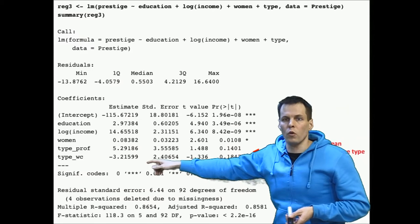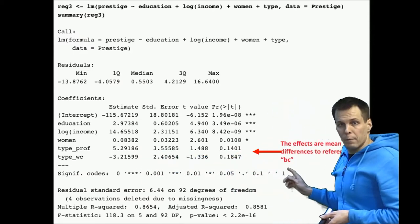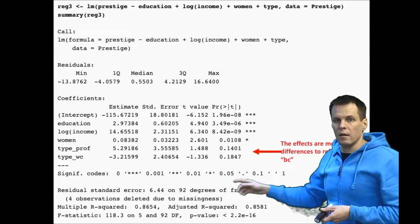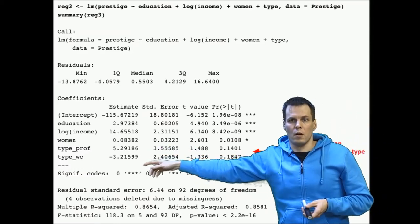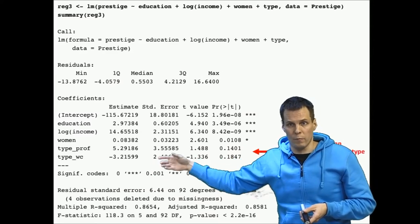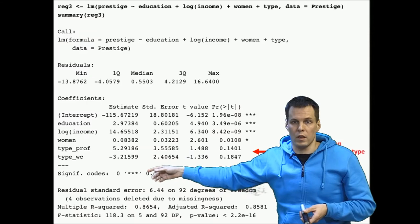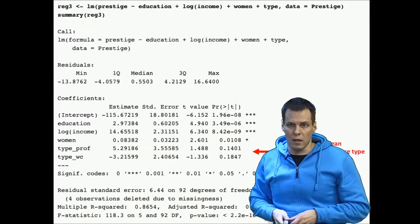These can be interpreted only against the blue collar. If we want to compare professional and white collar, we can manually include the dummies or indicate which category is left out, but that's more advanced.